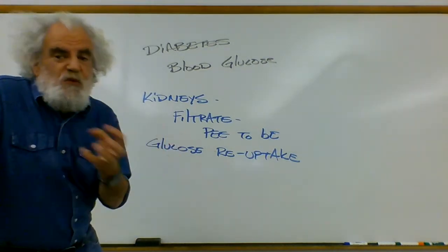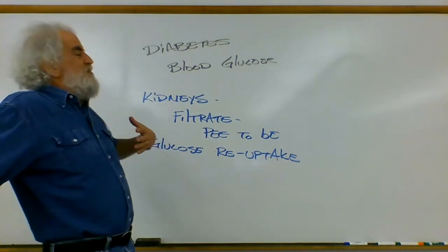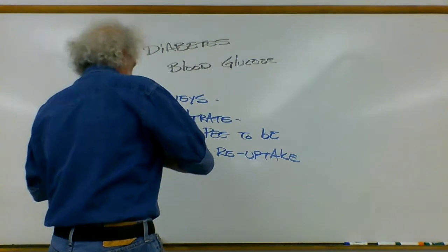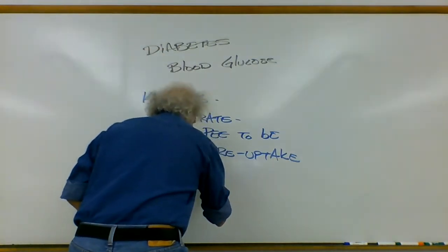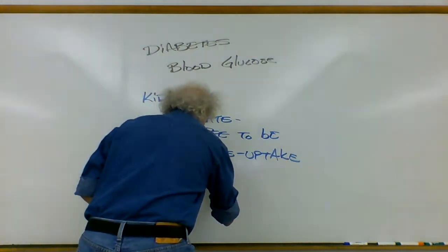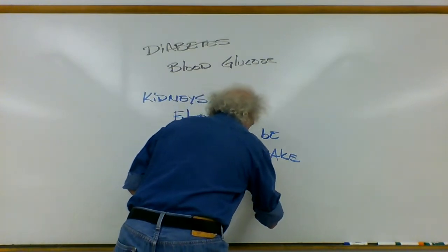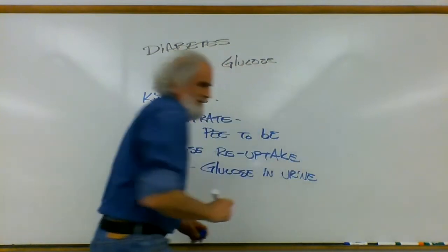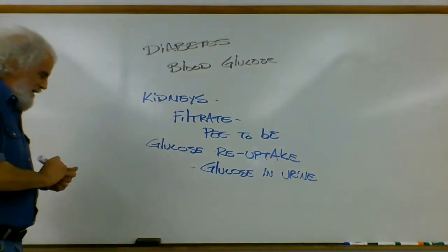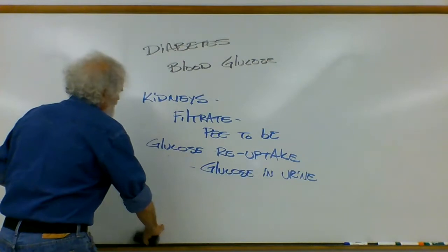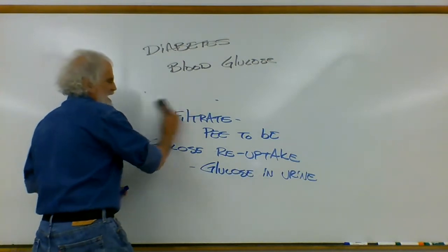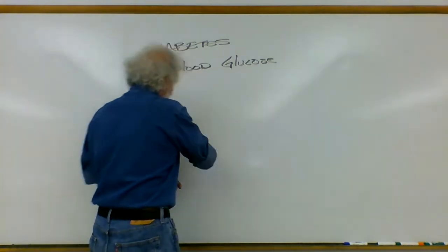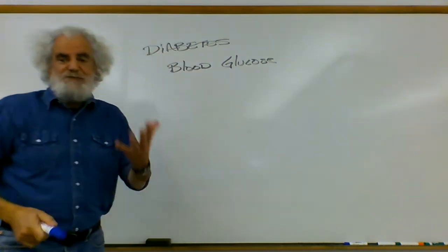And this glucose reuptake system is limited. There's only so much glucose that you can pull out. If there's too much glucose in the blood you can't take it up. So now we have glucose in the urine.